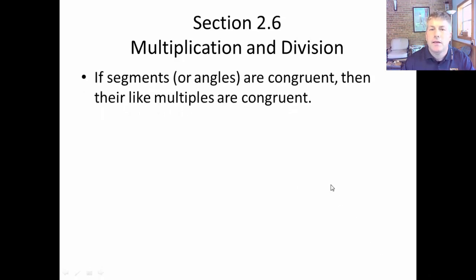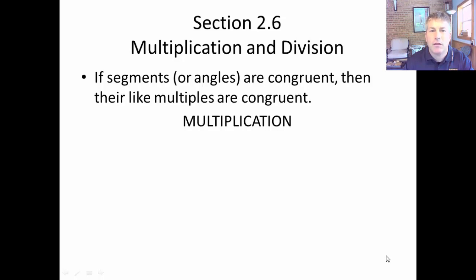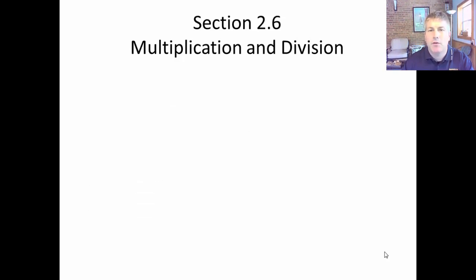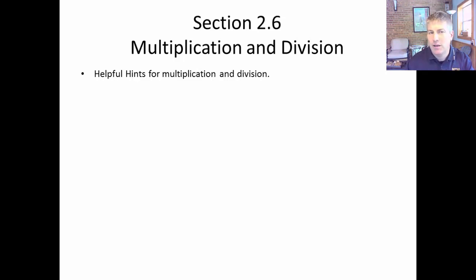So as we'll see in proof, if segments or angles are congruent, then their like multiples are congruent — we call this multiplication, going from something small to something bigger. And then division: if segments or angles are congruent, then their like divisions are congruent, and the reason you'll use in proof is simply division. Here are some really helpful hints for multiplication and division that will help you differentiate it from addition and subtraction.